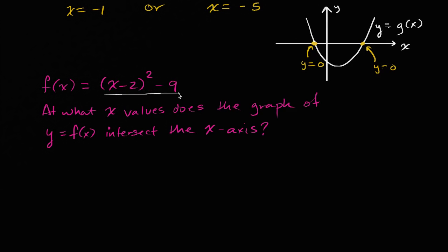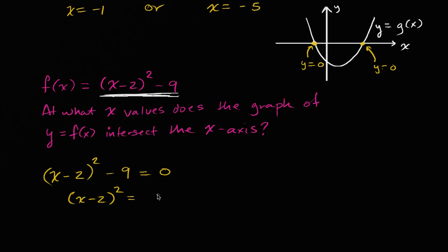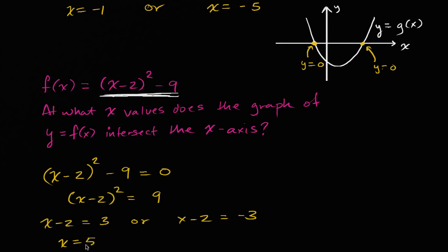So we rewrite this as x minus two squared minus nine equals zero. Adding nine to both sides, we get x minus two squared is equal to nine. Just like before, that means x minus two is equal to the positive or negative square root of nine. So x minus two is equal to positive three, or x minus two is equal to negative three. Adding two to both sides of the first equation gives x is equal to five, and adding two to both sides of the second gives x is equal to negative one.